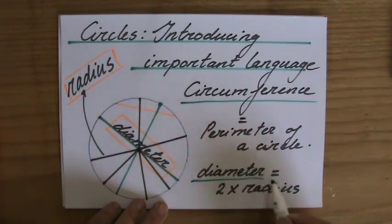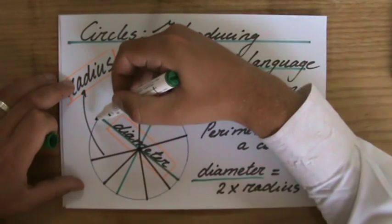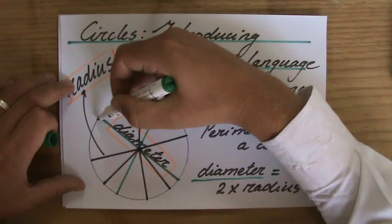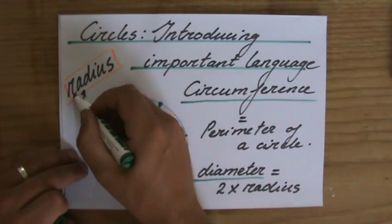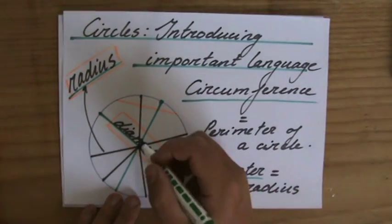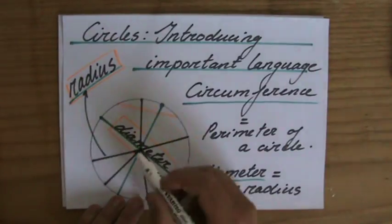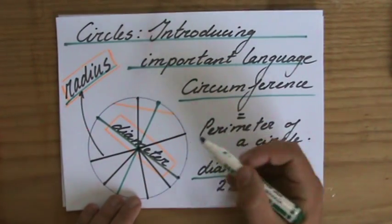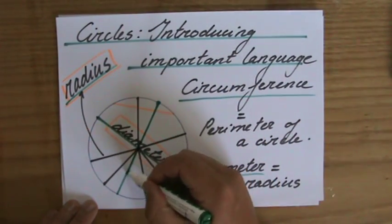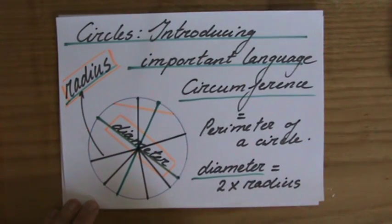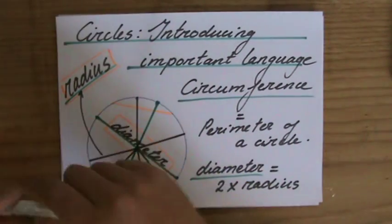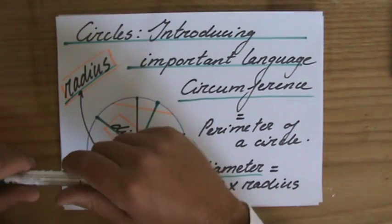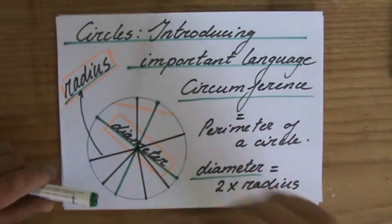We have spoken about the diameter, which is that line from one side of the circumference, through the midpoint, all the way to the other side of the circumference. And we've spoken about a radius. And the radius is that line from the middle of your circle to the circumference of the circle. So two times the radius is your diameter, or your diameter divided by two is your radius. Go to the next video, because I'm going to talk about pi. Not about apple pie, but a different kind of pi. See you there.